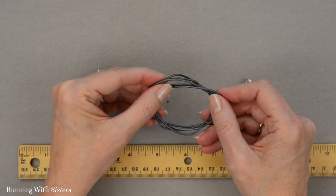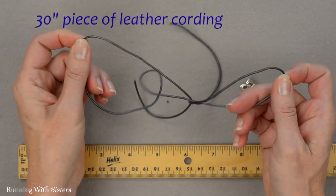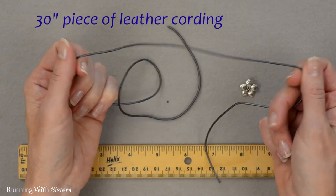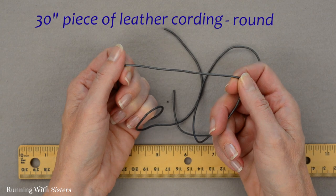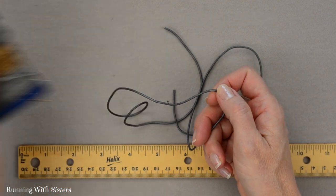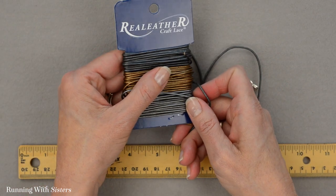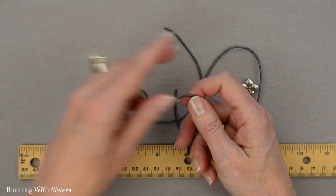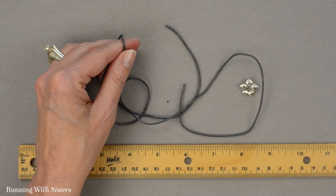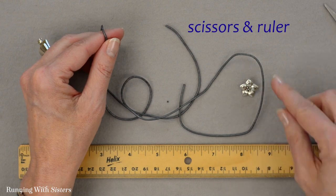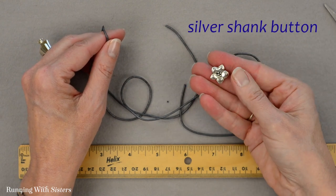To make this button clasp friendship bracelet, we're going to start with a 30-inch piece of leather cording. This is round leather cording lace. It comes in a package like this and you can get it at the craft store. The one we're using is 1.5 millimeters in diameter. We also have some scissors, a ruler, and a little silver shank button.